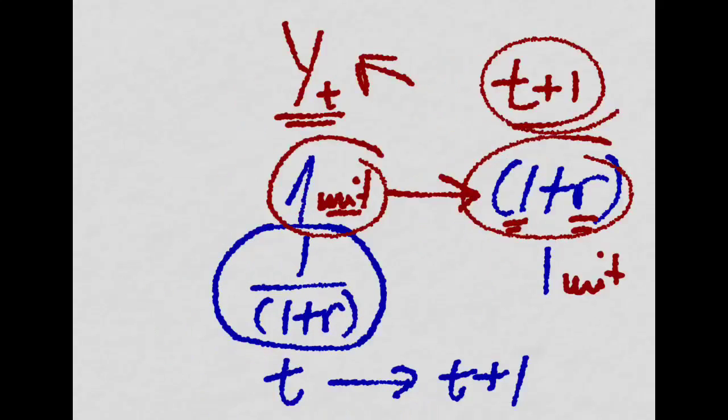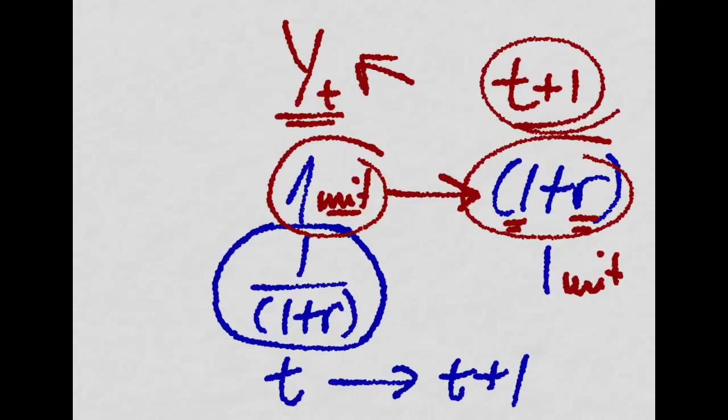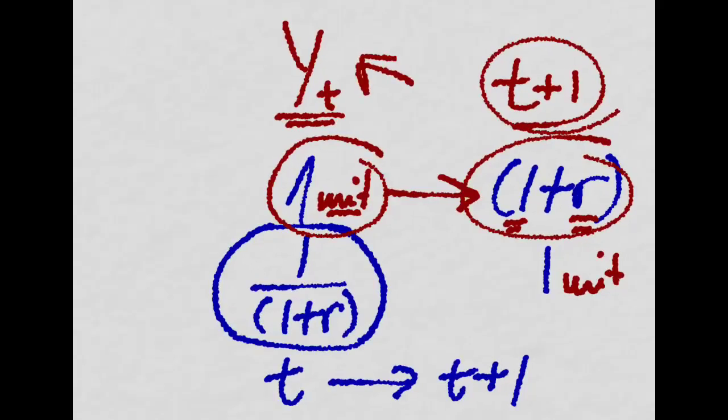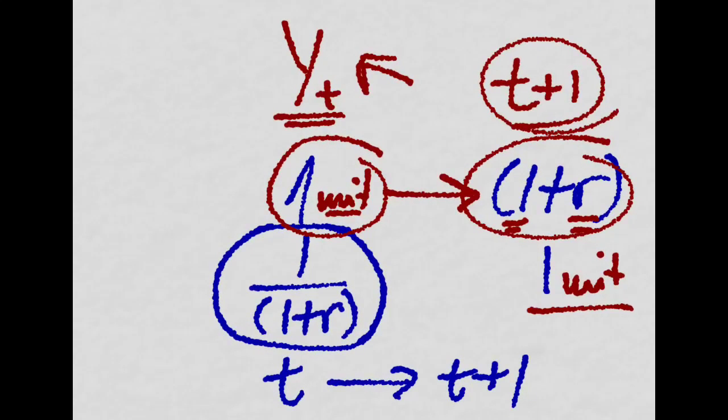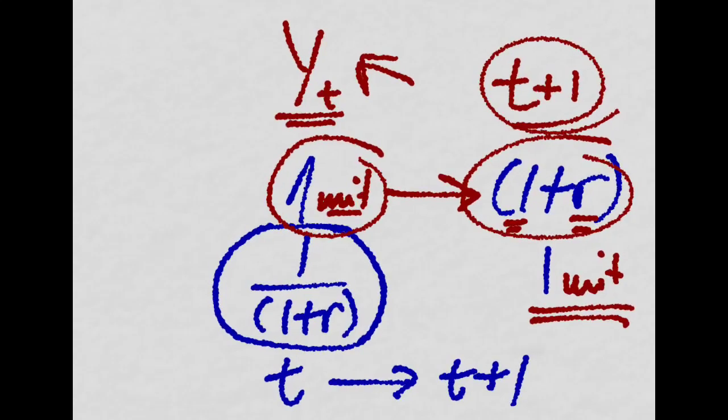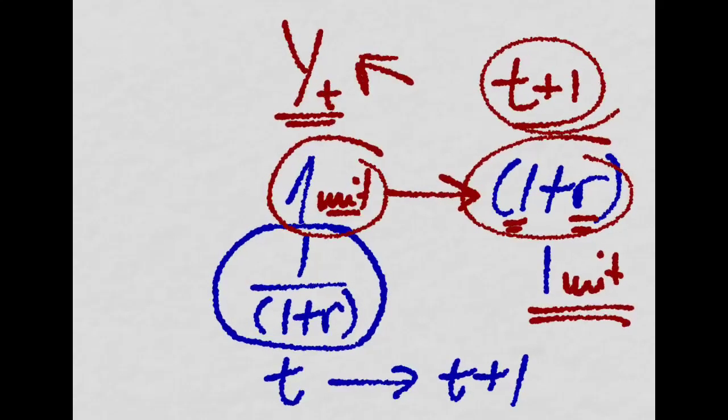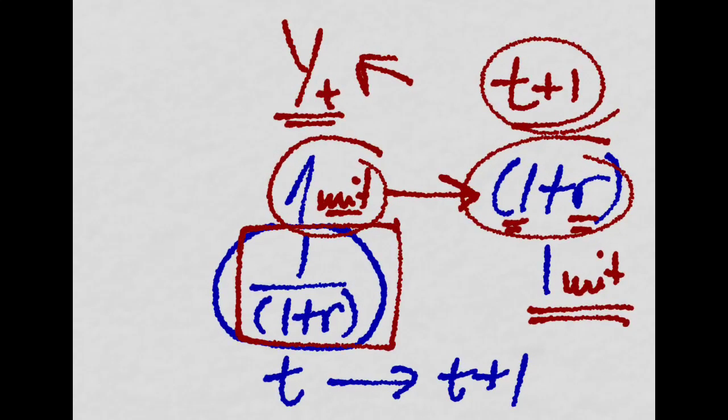So to get the price of the bond, the only thing we have to find out is basically how much do we have to pay now so that we can have an extra unit of output in the future. And of course the answer is the discounted value of this unit of output, which is 1 over 1 plus R. And this is the price of the bond.